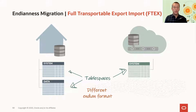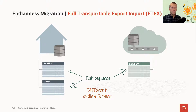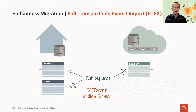In my source database I have a system and data tablespace. You would also have multiple tablespaces — syslogs, undo, temp and so forth — but for simplicity I only have system and data. In my empty PDB I only have a system tablespace. Note that the color is different because they are not sharing the same endian format.